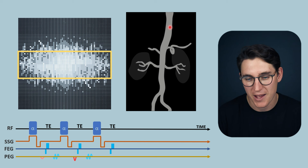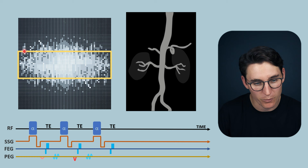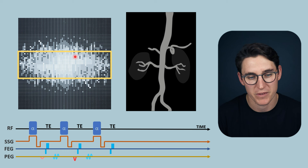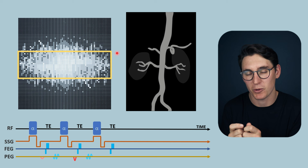Obviously, the more we try to get temporal resolution — the more rapidly we sample the center of k-space — the more we lose some spatial resolution. It's a trade-off: the more we sample the entirety of k-space, the better the spatial resolution, but we get a loss of temporal resolution.